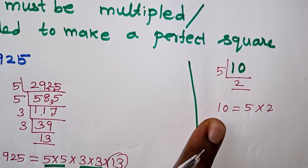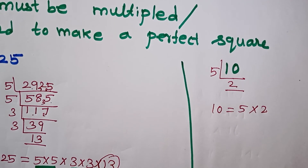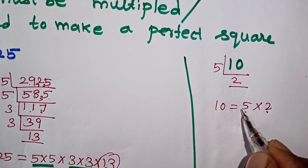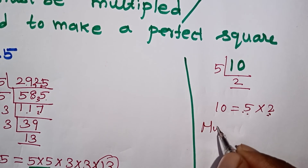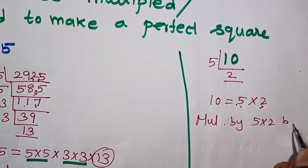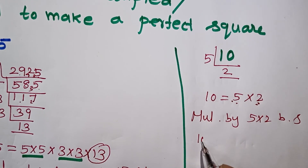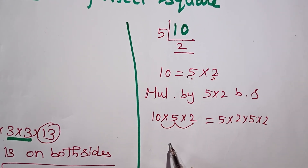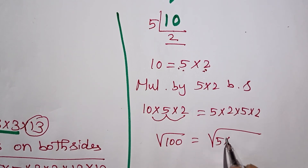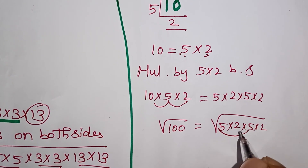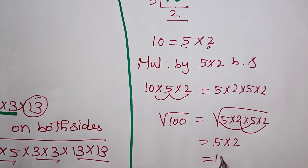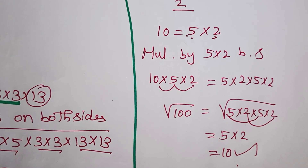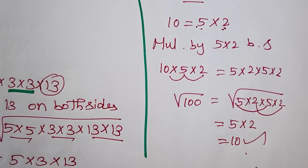If one number is a perfect square, there are two factors coming from the prime factorization. If 5 and 2 are unpaired, you multiply by 5 into 2 on both sides to make them double numbers. So if you multiply by 5×2=10 both sides, this gives the correct answer. Subscribe to the channel for more videos.